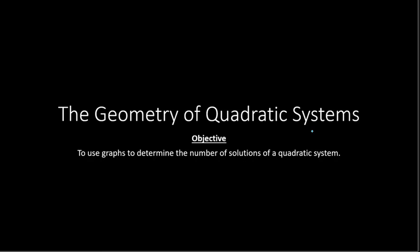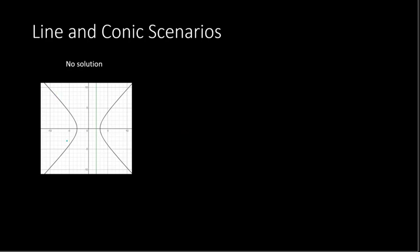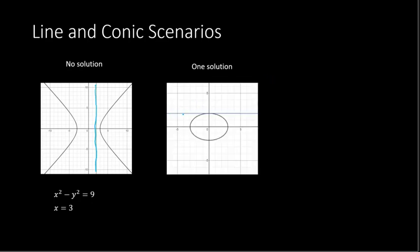We will also begin with systems that have a quadratic equation and a linear equation. For example, with a line and a hyperbola, we could get no solutions — where the vertical line does not touch any point on the hyperbola. We could also have one solution where a horizontal line intersects an ellipse at just one point.